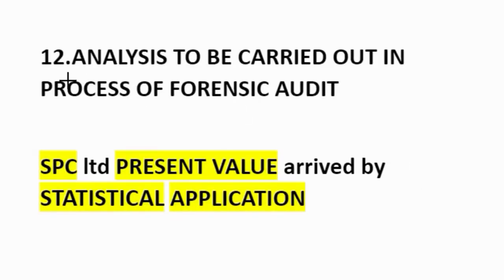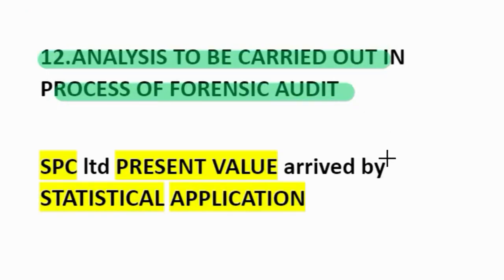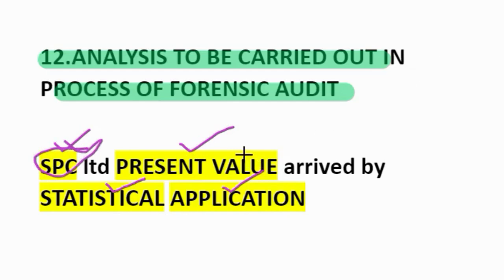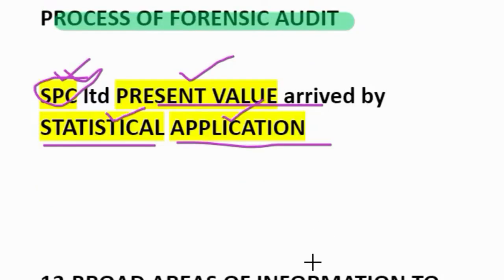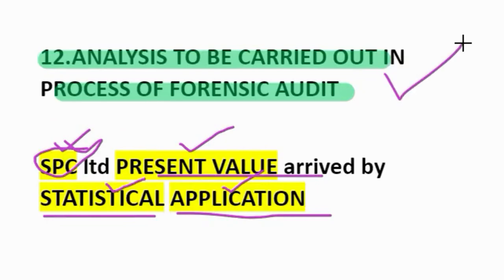Twelfth question: analysis to be carried out in process of forensic audit. How to remember? SPC Limited — present value arrived by statistical application. SPC: S for summarization of large number of transactions, P for performing robust procedures to trace unidentified assets, C for calculating the economic damages and if required the loss of goodwill. Present value: estimating the present value of the financial losses or frauds involved in case such irregularities or frauds took place for a long period of time. Statistical: performing statistical regression or sensitivity analysis of the fraud. Application: using various computerized application softwares and graphs to explain and analyze the frauds.